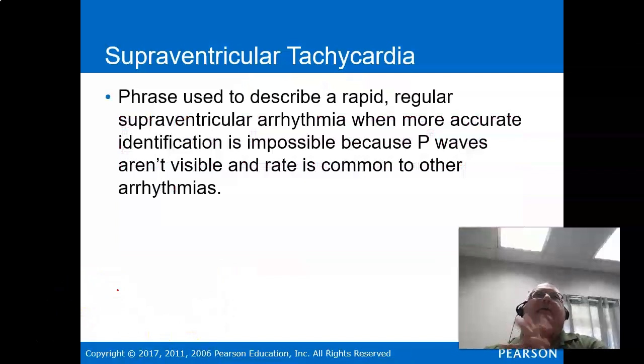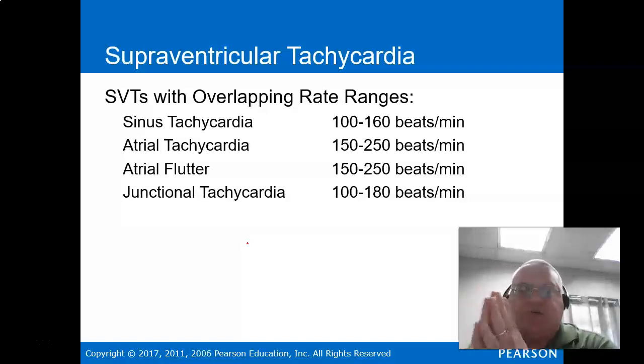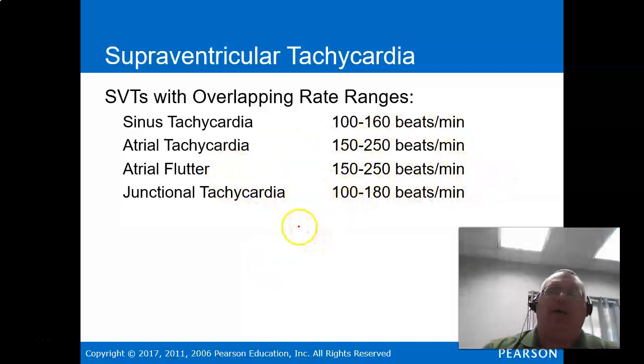Supraventricular tachycardia. We talked about this a little bit in the atrial rhythms. It's actually a phrase to describe the rapid, regular, supraventricular rhythm that identifies because we can't see the P waves. So it's kind of, I call it a scapegoat. Because it's narrow and complex. We can't really tell if it's Ps. Let's just call it supraventricular tachycardia. I kind of cringe every time I hear it, but that is true. Stop and think about the things that can cause a tachycardic rhythm.